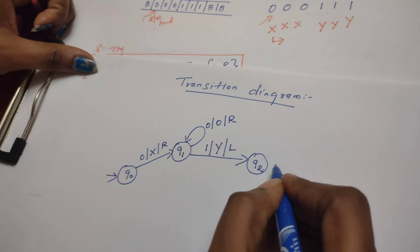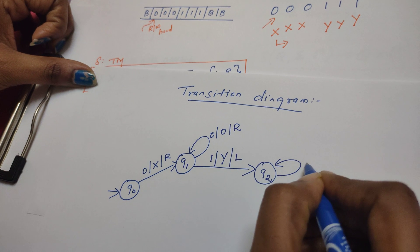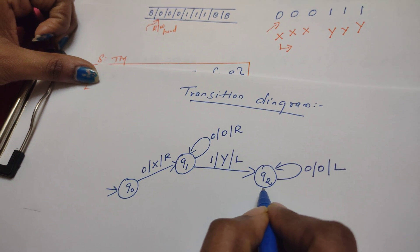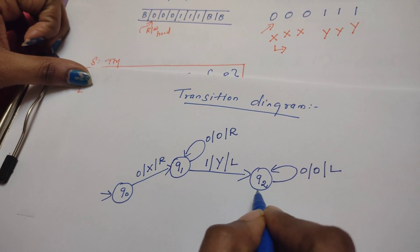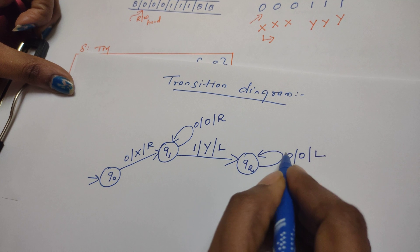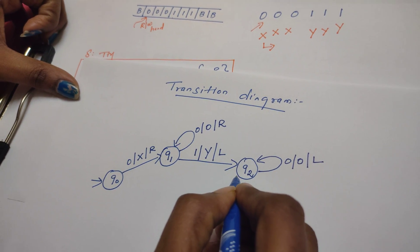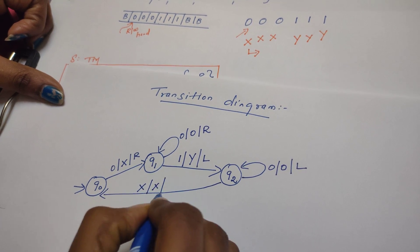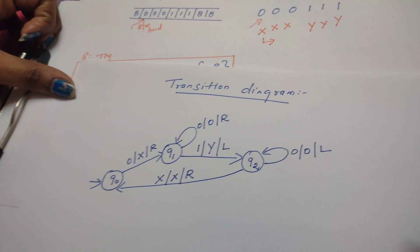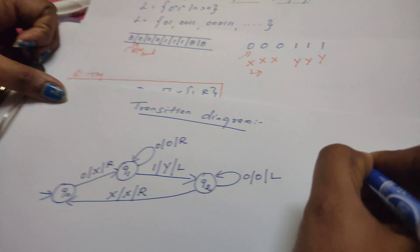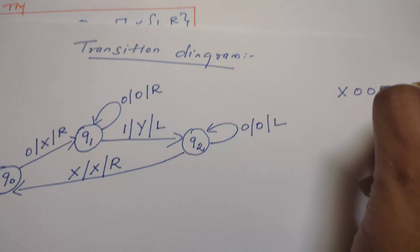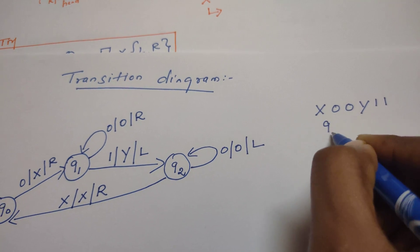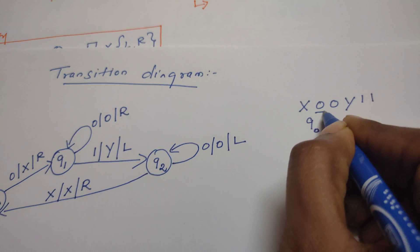Now in state q2, the head moves left. It will come across zeros before reaching x. Whenever it reads zeros, they are not disturbed — the head continues moving left. The purpose is to find x so it can locate the leftmost zero. When it reads x, that x is also not disturbed, but the head changes direction to right and the state returns to q0, ready to process the next zero.